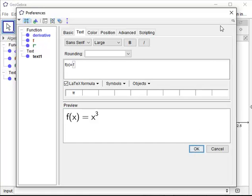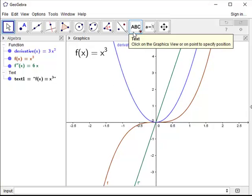So now when I click OK and close the box, there's my function. If I need to move it out of the way, I can. So my function is now labeled. We could do the same thing for the first and second derivative using the text tool.